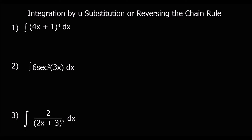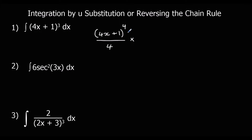Here are 3 questions — you can pause the video and give these a go if you like. For question 1, we integrate around the bracket normally: (4x + 1) to the power of 4 over 4. Then divide by the bracket differentiated, which is 4, so times by one quarter. That gives us (4x + 1)^4 over 16 plus c.